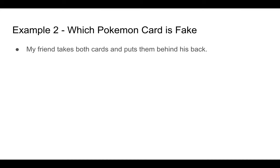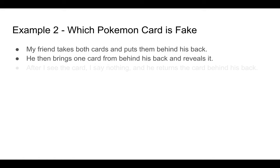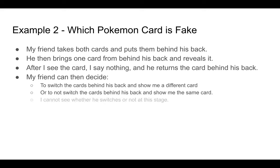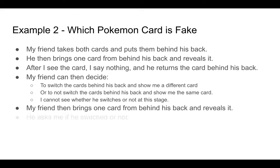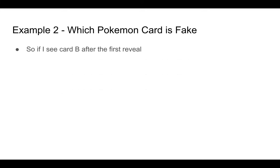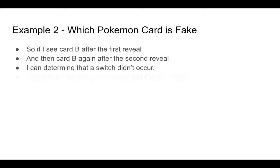So, how do I prove that I have this ability to my skeptical friend? What we can do is arrange the following experiment. My friend takes both cards and puts them behind his back. He then brings one card from behind his back and reveals it. After I see the card, I say nothing, and he returns the card behind his back. My friend can then decide to either switch the cards behind his back and show me a different card, or not switch and show me the same card. I cannot see whether he's switching or not at this stage. My friend then brings one card from behind his back and reveals it, and then asks me if he's switched or not. Because I can distinguish between the cards, I can answer him correctly. If I see card B after the first reveal and then card B again after the second reveal, I can determine that a switch didn't occur. Notice that I never have to reveal whether or not card B is fake.